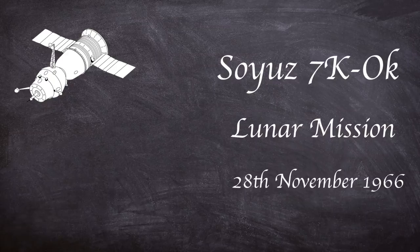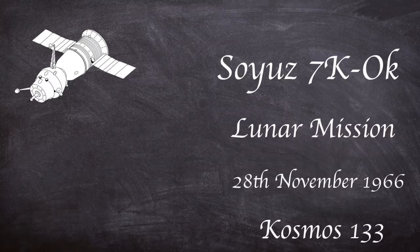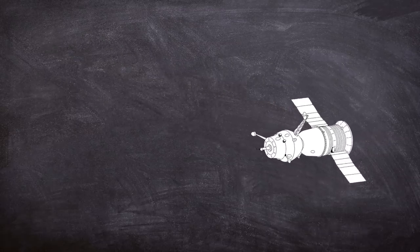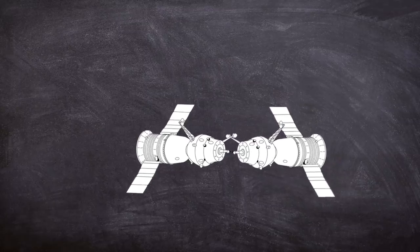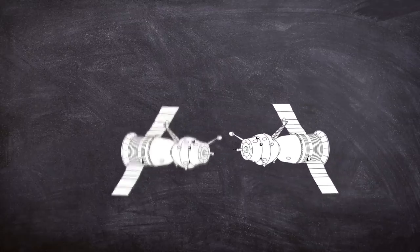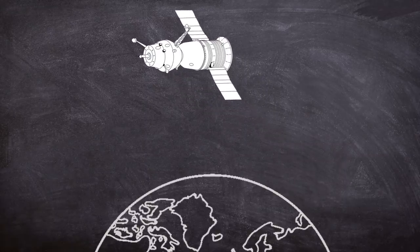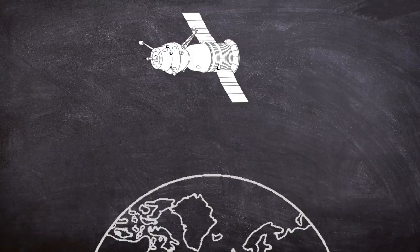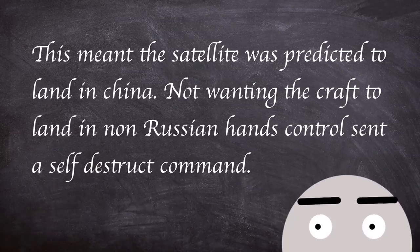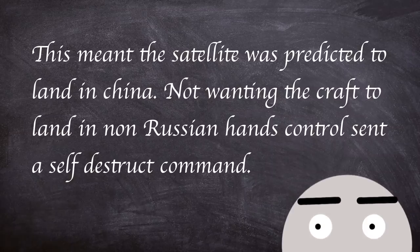The first test flight took place on November 28, 1966, during the Cosmos 133 mission. The mission was intended to test automated docking of a second Soyuz launched a day later. However, problems with the second vehicle ruined the planned objective. The abandoning of the second launch required the first Soyuz to be maneuvered for re-entry. Issues with the onboard systems led to an incorrect burn, meaning landing was predicted in China. Not wanting the craft to land in non-Russian hands, control sent a self-destruct command.